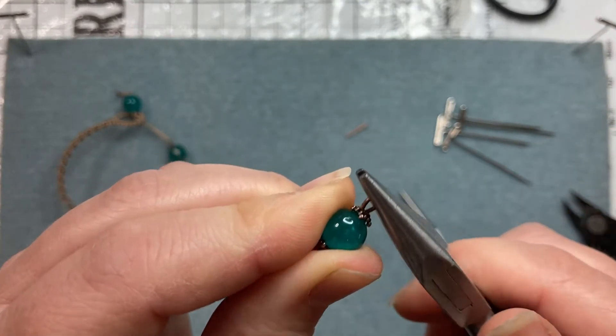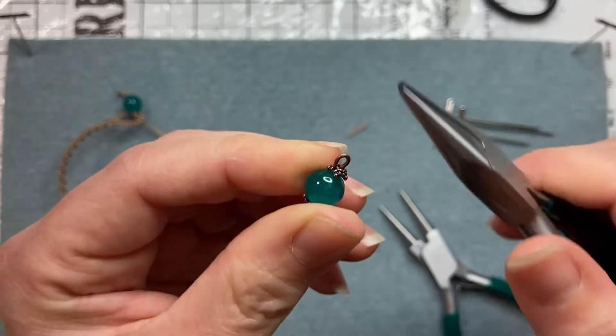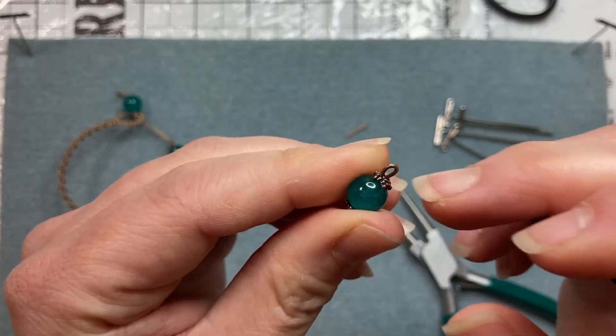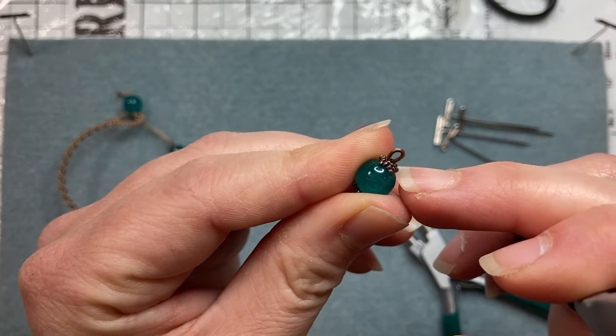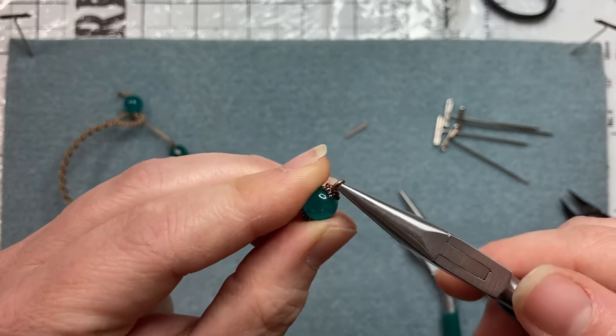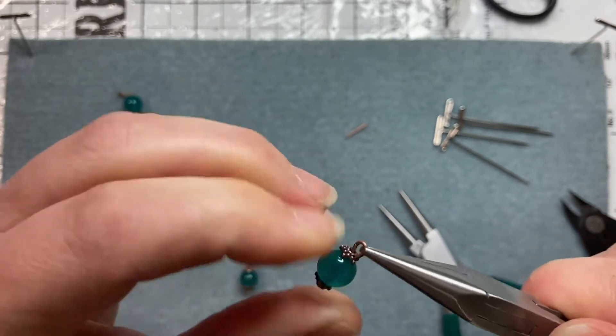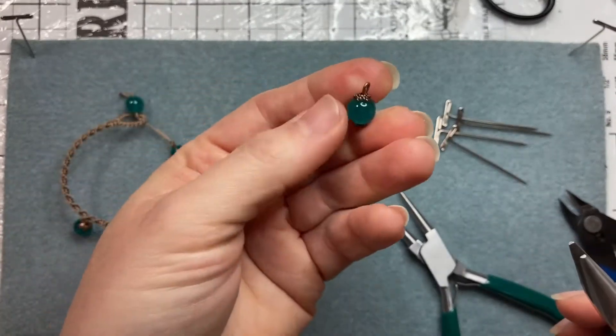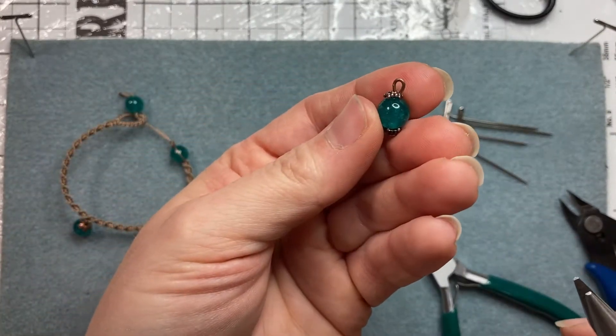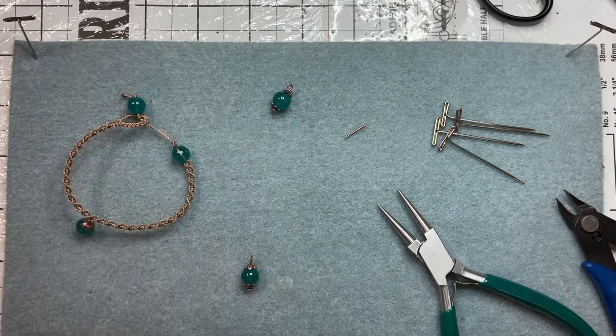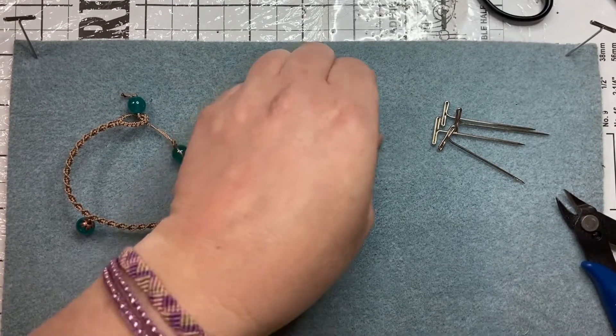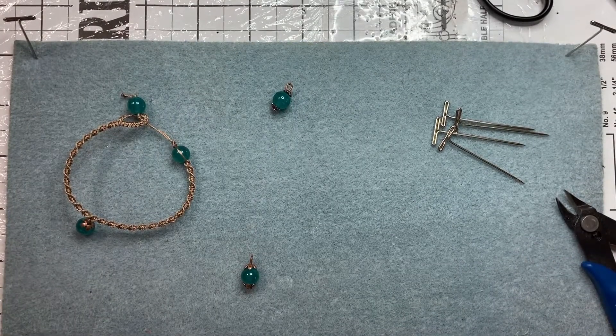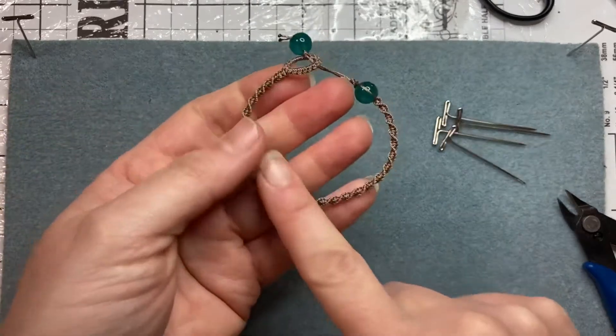Sometimes I take my chain nose pliers and just continue. See, as you can see it's hard to hold together. But I just continue pressing down because you don't want this to really move around on you. Okay, so that is how you create that cute little charm. And now we're ready to create the spiral.